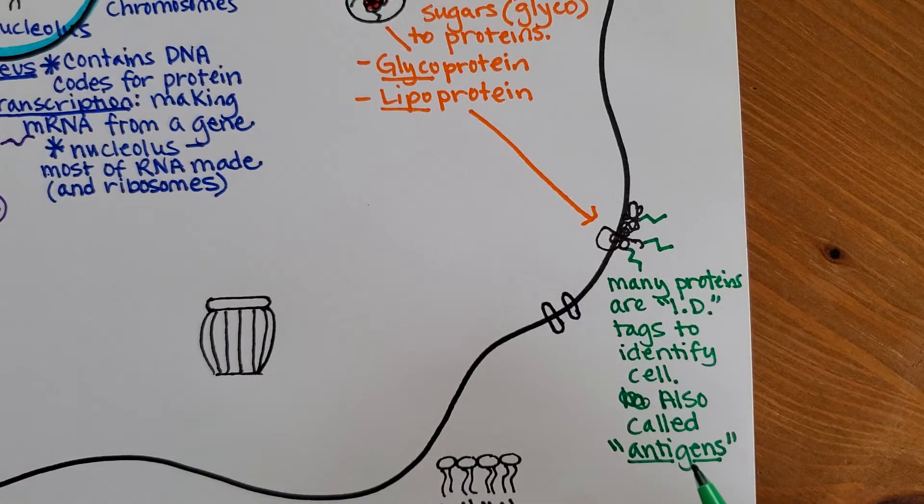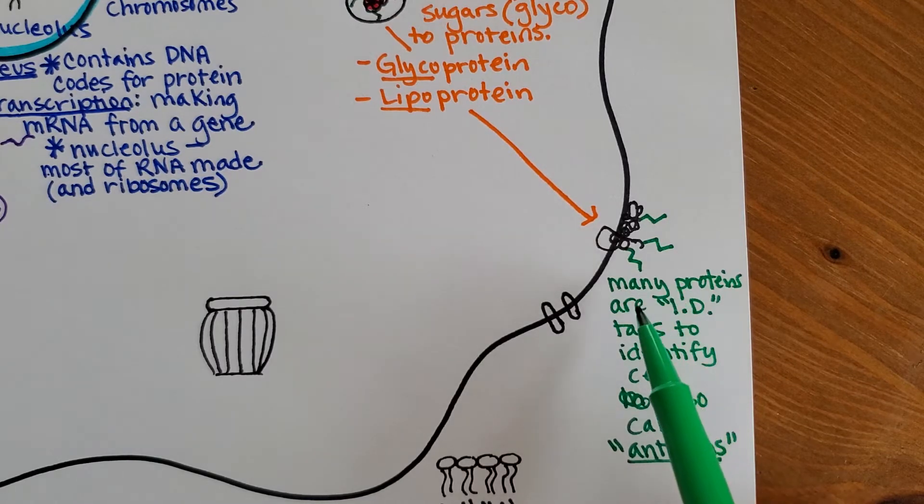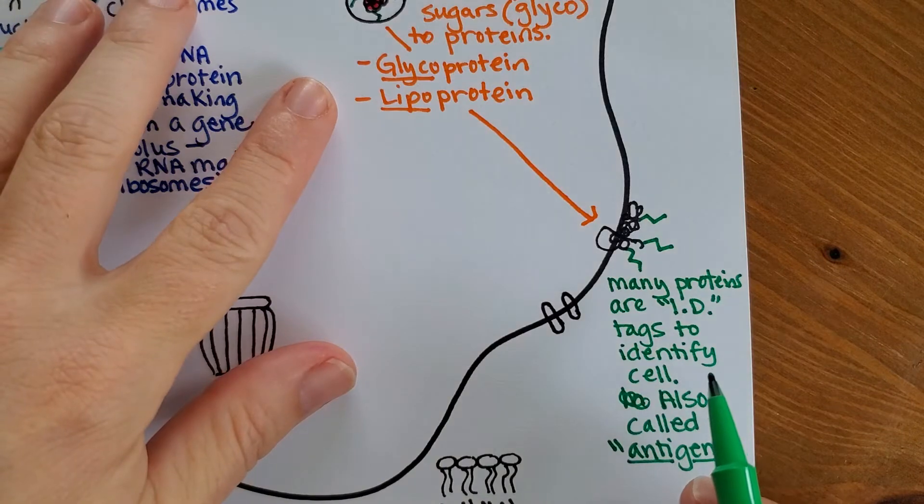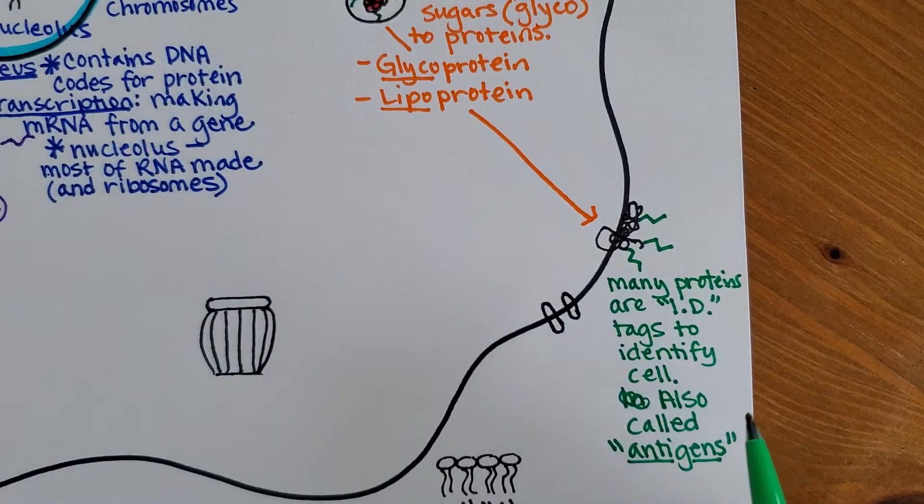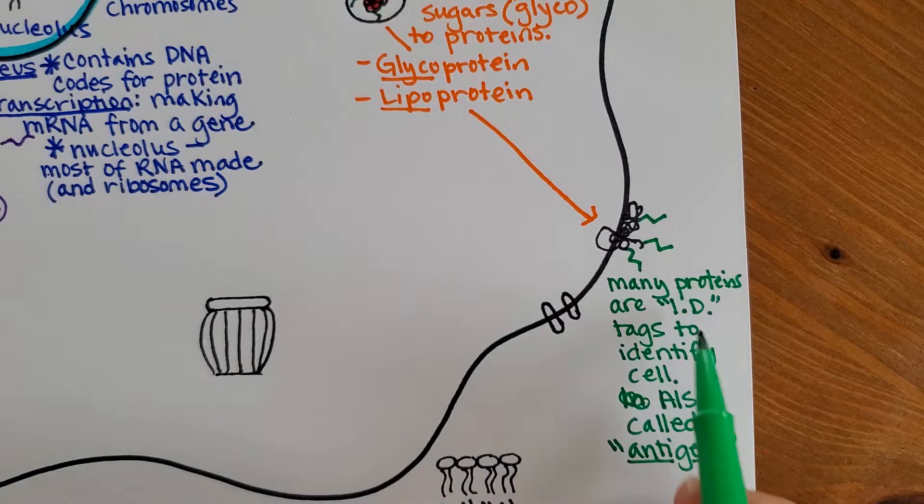Those are all good examples of how proteins on the surface of cell, we can often just call them antigens. And they are involved in both your immune response to foreign things that come inside of you, but also just for the day-to-day normal stuff where this is a liver cell saying, hey, I'm a liver cell. Leave me alone. I'm doing my job. I have my appropriate identification.